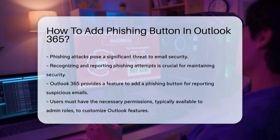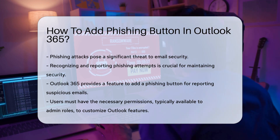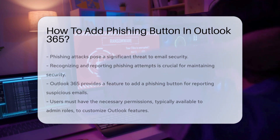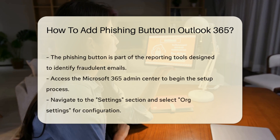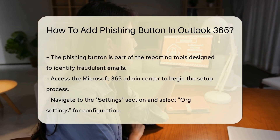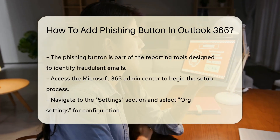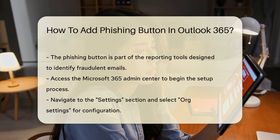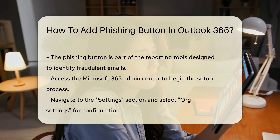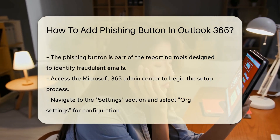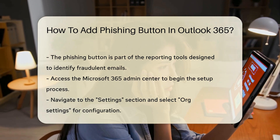To begin, ensure you have the necessary permissions to customize Outlook features. This is typically available to users with admin roles in an organization. The phishing button is part of the reporting tools that help identify fraudulent emails.